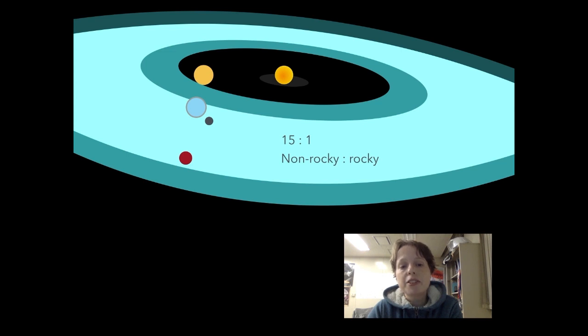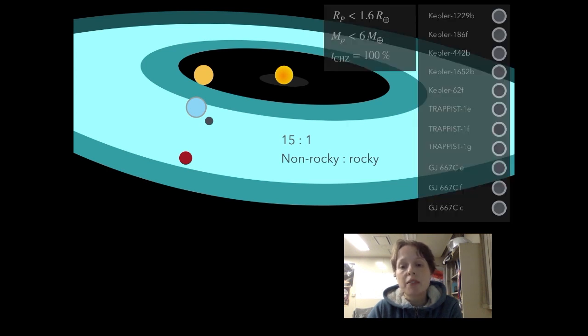Of the planets we've found so far orbiting in the classical habitable zone, almost 15 times as many are large enough to likely have thick Neptune-like atmospheres compared to planets that might be rocky. We have discovered planets that are the right size to be rocky and orbit entirely within the habitable zone. Are these Earth-like enough to support liquid water in this region? We don't know. They may have very different atmospheric gases or geology that make surface water impossible.